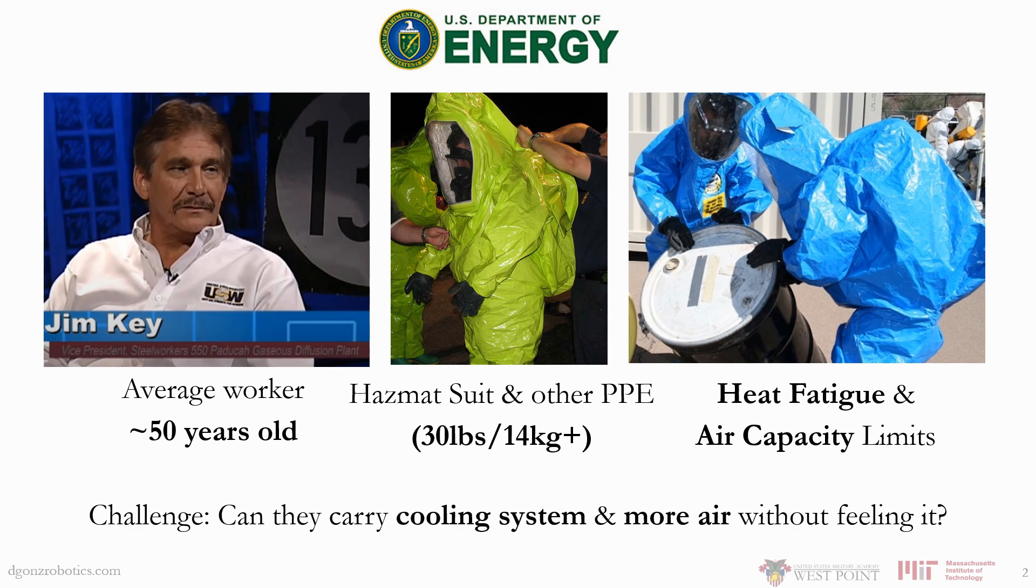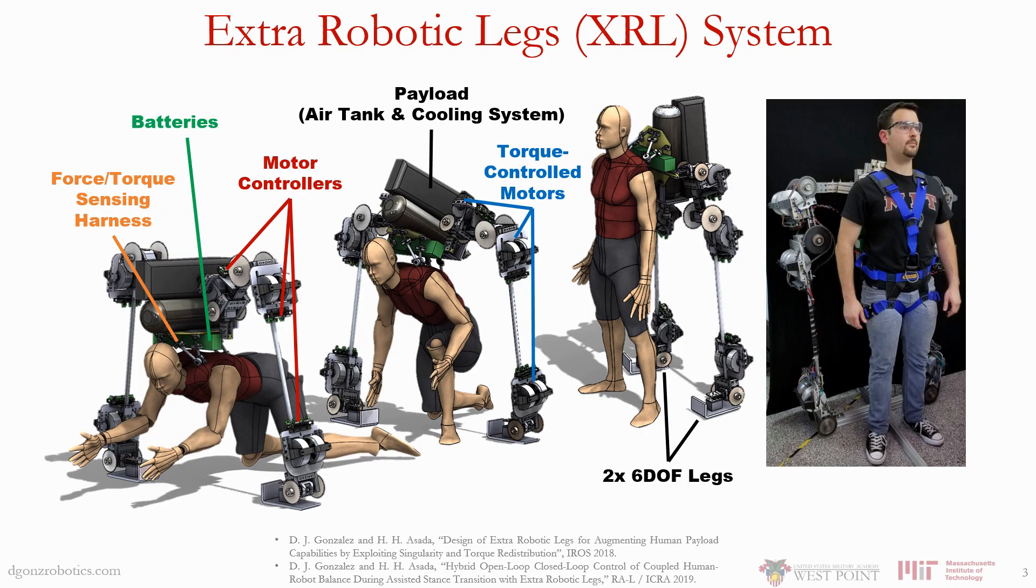They'd frequently suffer from repetitive strain and other back injuries while wearing their heavy personal protective equipment. The limited air they carry on their back and the potential for heat fatigue in their hot and humid work environments limit the amount of time that they can stay at a task location. Being able to carry a cooling system and some extra air with them would make their job much easier, but it would be too heavy without some kind of augmentation. This is why we built the extra robotic leg system.